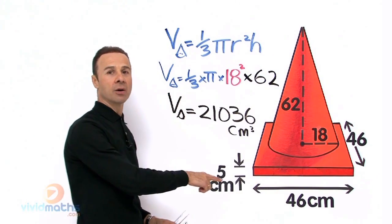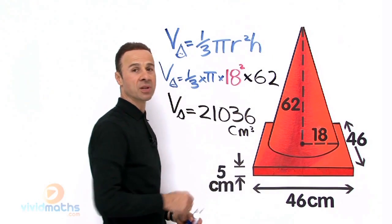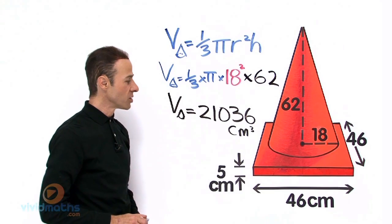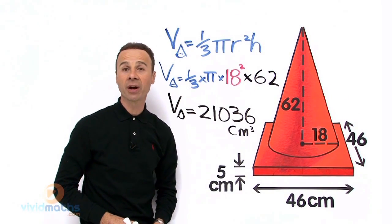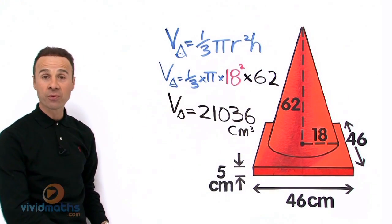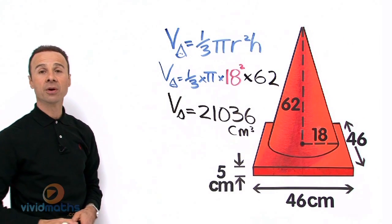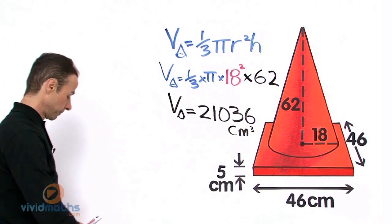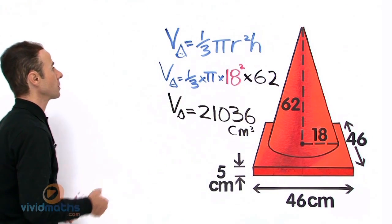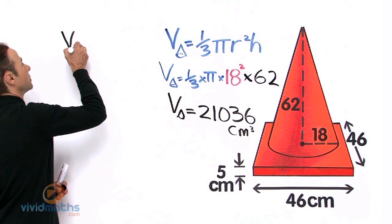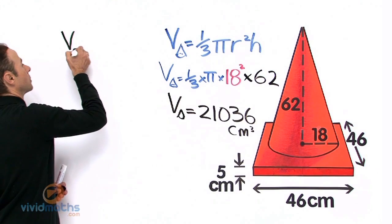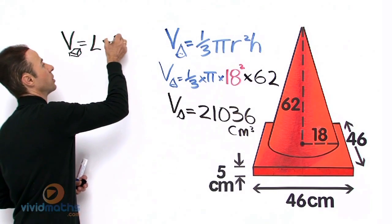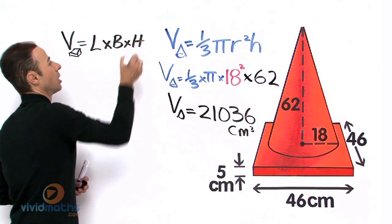Now let us go down to the base. We have a rectangular prism, and the dimensions are all shown. First things first, we write up the formula for the volume of a rectangular prism. And that formula is: volume equals length times breadth times height.